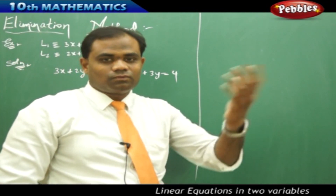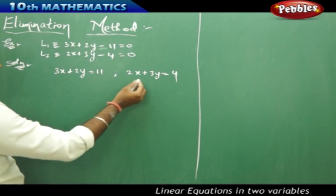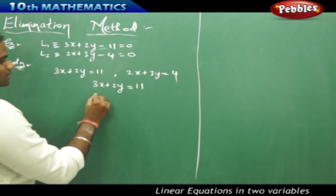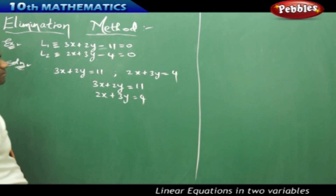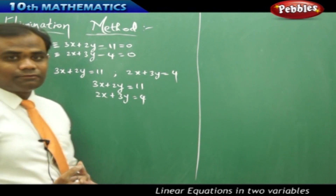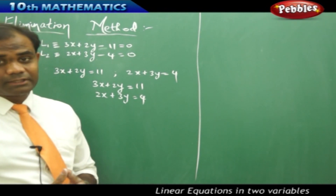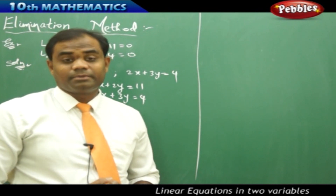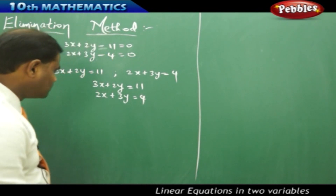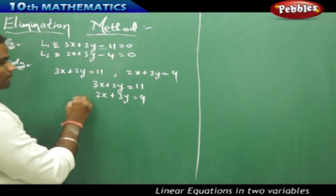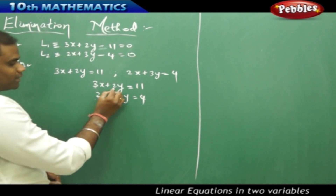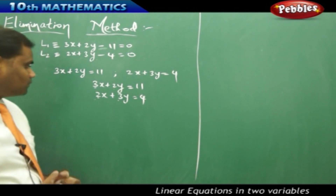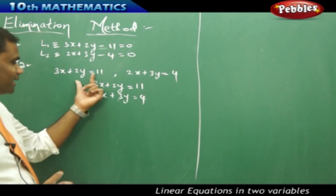I write one equation over the other. The most important rule in the elimination method is that the coefficients of either x or y must be made equal. Here the coefficient of x is 3 in L1 and 2 in L2 — not equal. Similarly, the coefficient of y is 2 in L1 and 3 in L2 — also not equal. Our goal is to make the coefficients equal for either x or y.